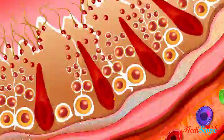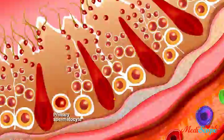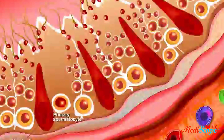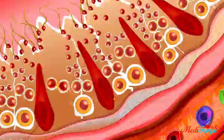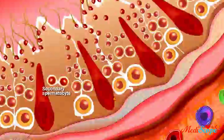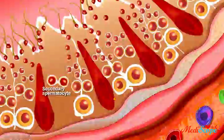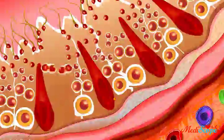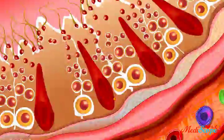Spermatogonia first proliferate by mitosis to become diploid primary spermatocytes, or 2N. Primary spermatocytes are then transformed into 2 secondary spermatocytes, or 1N, during meiosis I. Each of these cells in turn is converted into 2 haploid spermatids, also 1N, during meiosis II.